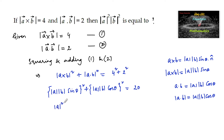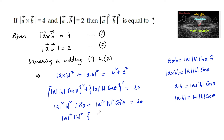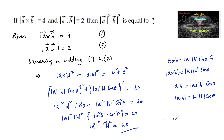We can write mod a squared mod b squared sin squared theta plus mod a squared mod b squared cos squared theta, which equals 20. Taking mod a squared mod b squared common, we get mod a squared into mod b squared times (sin squared theta plus cos squared theta) equals 20. Since sin squared theta plus cos squared theta equals 1, we conclude that mod a squared into mod b squared is equal to 20.